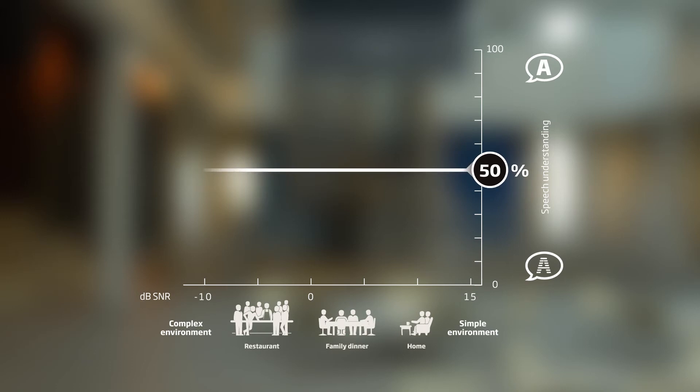When only half of the speech information is intelligible, the listener will have to rely heavily on guesswork. The dotted curve shows speech understanding of a person wearing a well-fitted hearing aid with noise reduction switched off. Look how speech recognition drops significantly as soon as the noise becomes louder than the speech, or in other words, when the signal-to-noise ratio becomes negative.